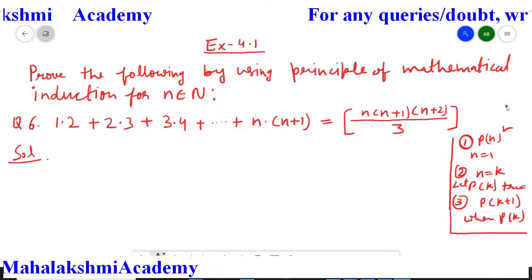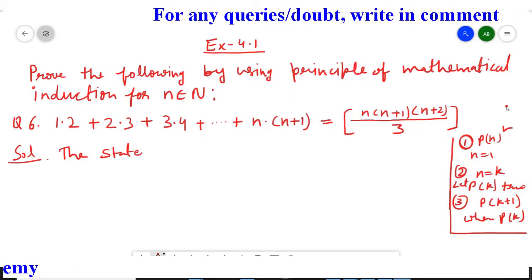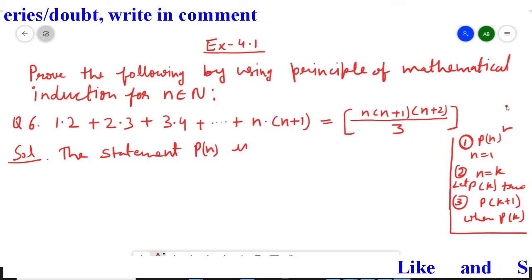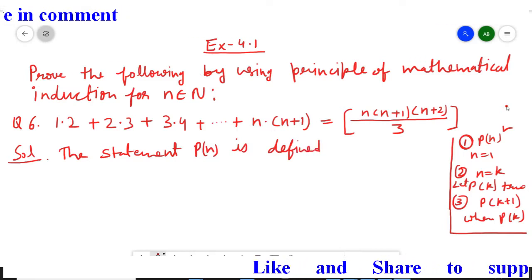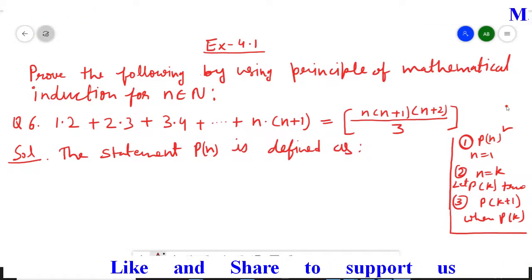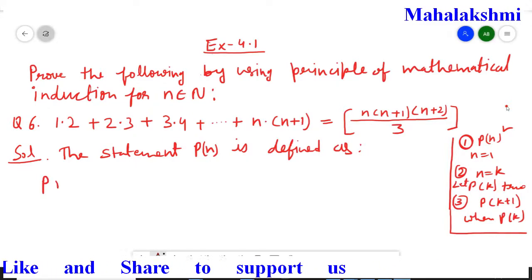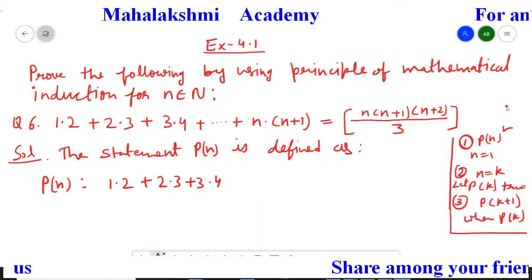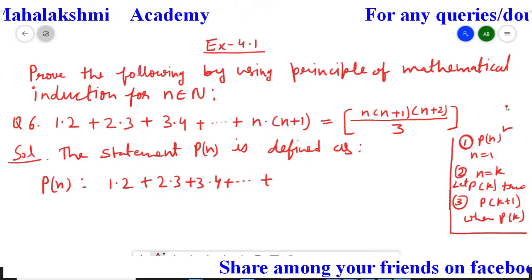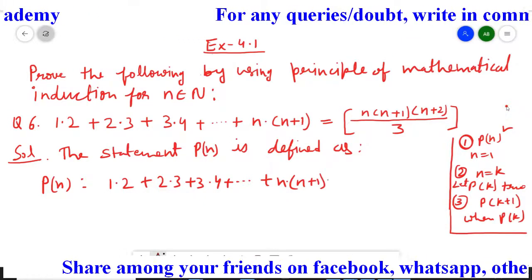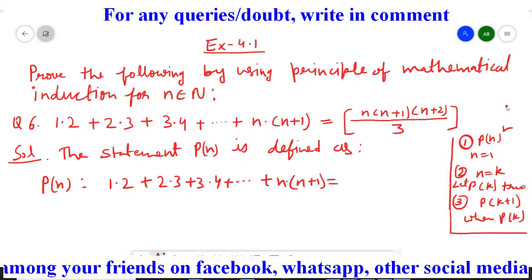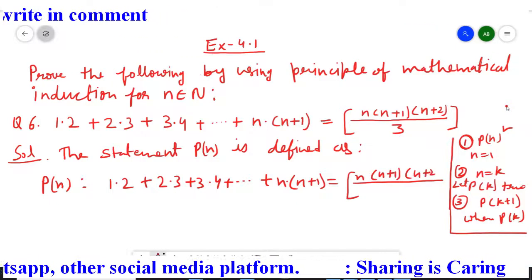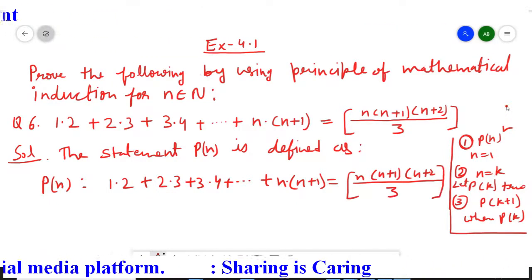We will write here the statement P(n) is defined as: P(n) is 1×2 + 2×3 + 3×4 extended up to n×(n+1), and the sum of this series equals n(n+1)(n+2) divided by 3. So this is our P(n) statement.